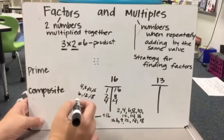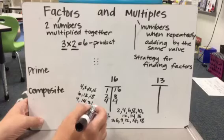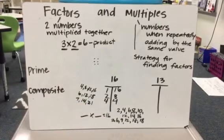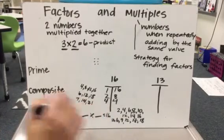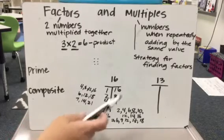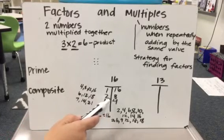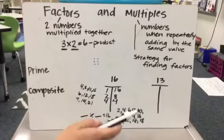And let me try 7. So 7, 14, 21. Again, not a factor because I didn't land right on 16. I already know that 8 works because here I saw 8 groups of 2, 2 groups of 8. So I don't need to do 8 again.